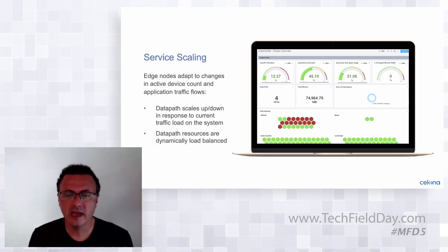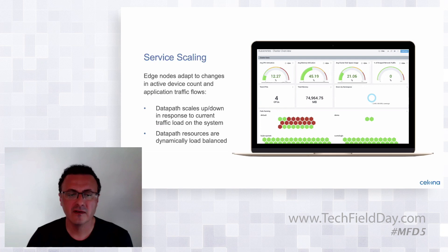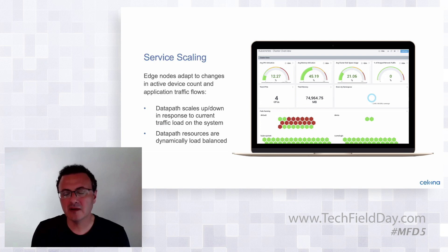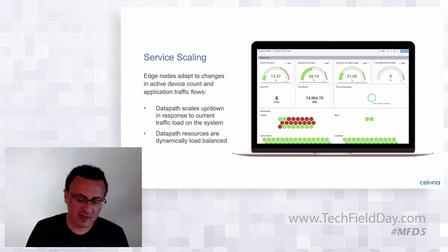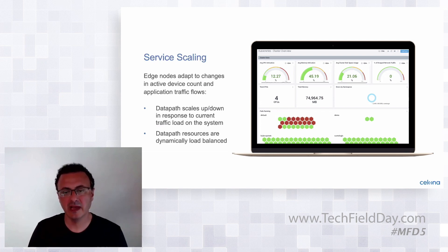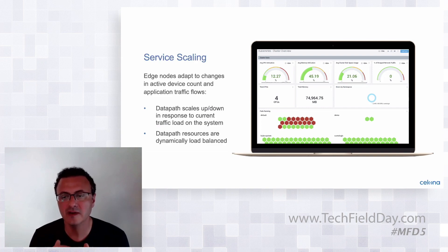If you simply look at the total number of devices and allocate resources accordingly, you will be way off, because the requirements of a PTT device will be much less on the edge. Instead, what we do is scale the allocation of resources separately for each of these microslices or device groups according to the needs of that specific microslice. This also gives us the ability to prioritize some device groups with higher priority — so if you run out of capacity on the edge, you can ensure that higher priority traffic microslices are always handled.